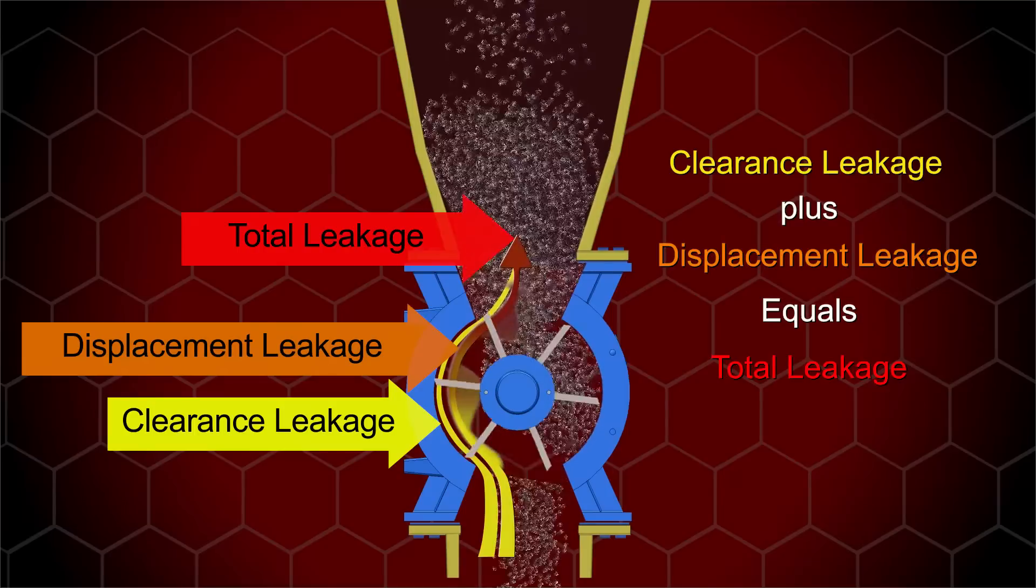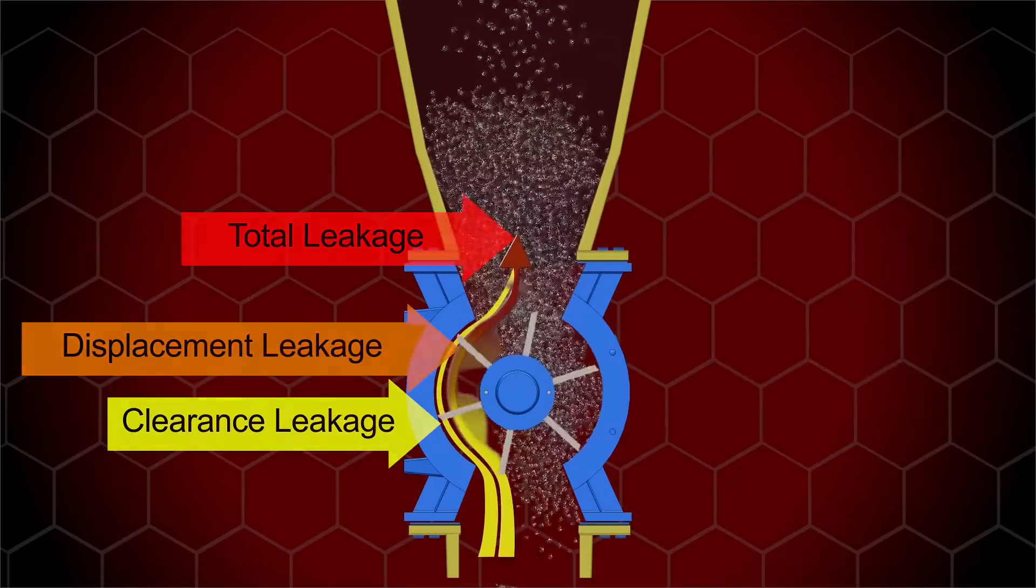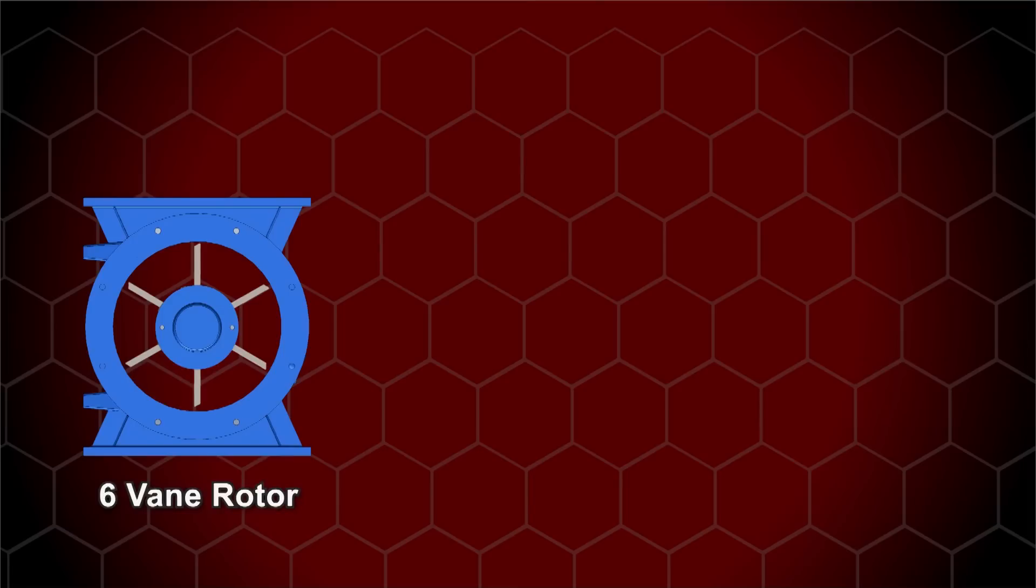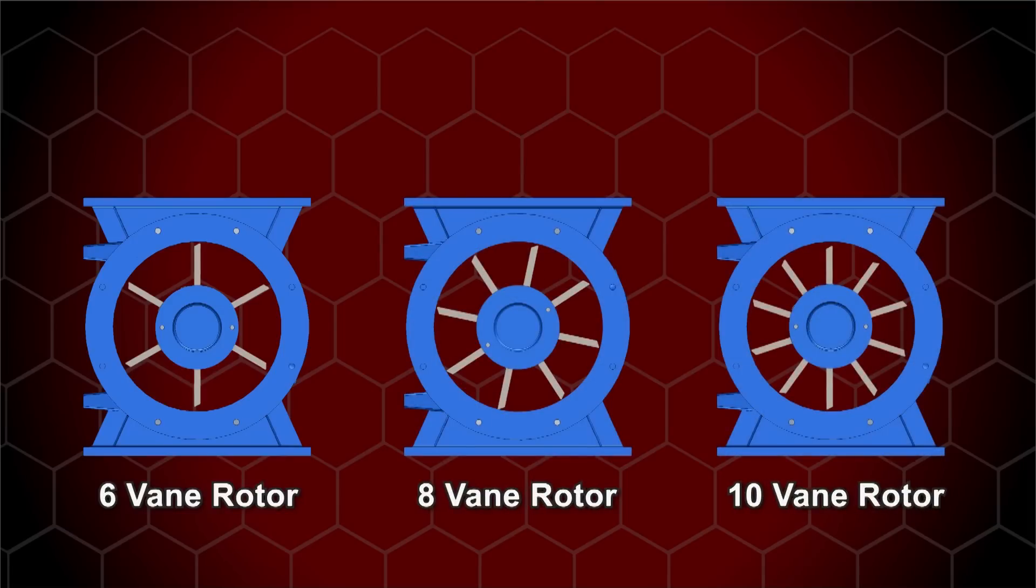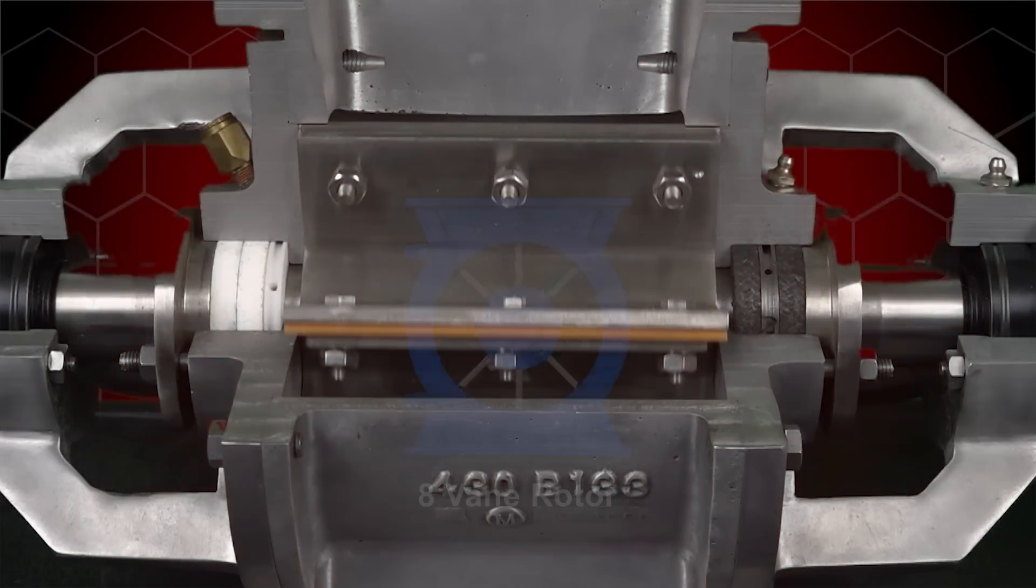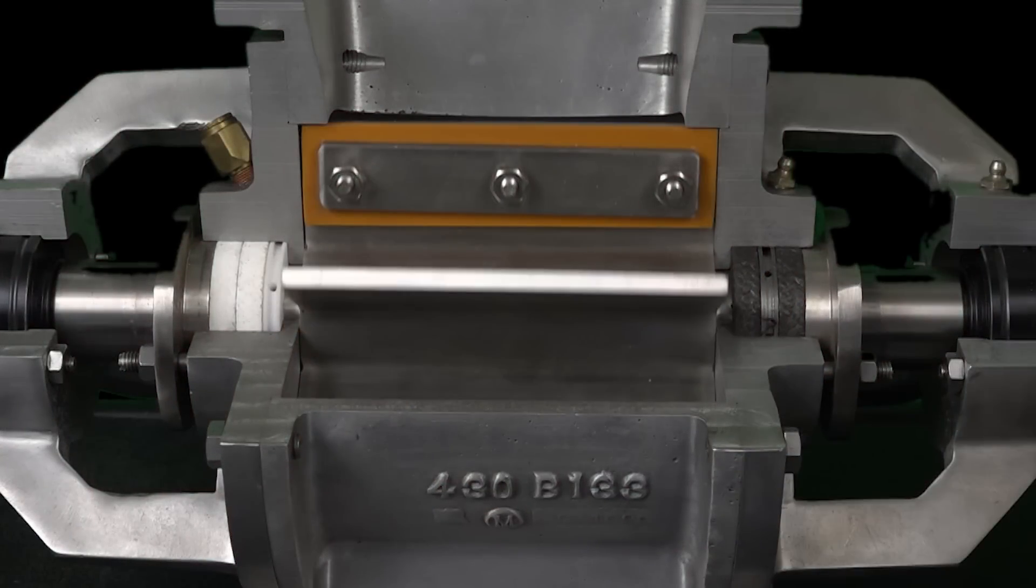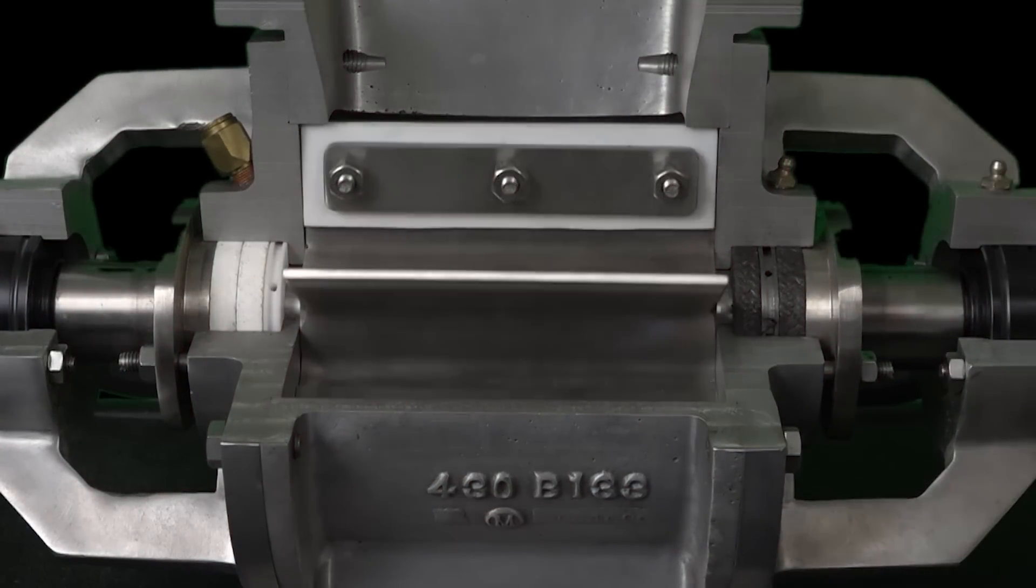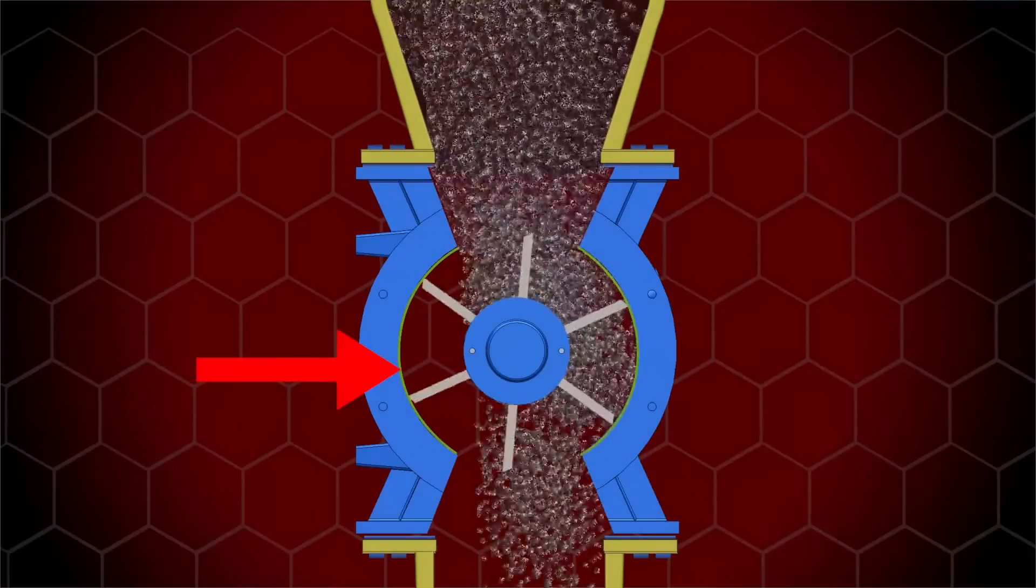Some of the ways to minimize valve leakage include increasing the number of vanes on the rotor from 6 to 8 or even 10, installing contact type seal strips like polyurethane, neoprene, or teflon, and providing tighter rotor vane clearance.